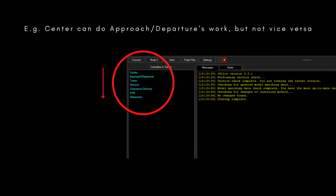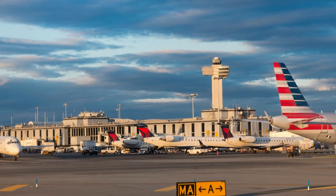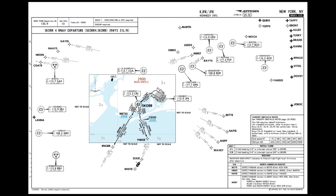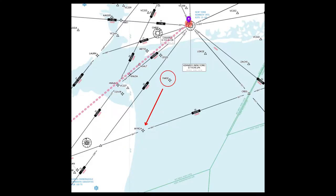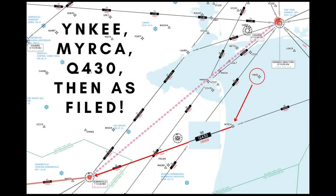Assume clearance delivery for New York is online. I tune that frequency and say: 'New York Clearance Delivery, good afternoon, Air Canada 248, gate 33, type A320neo, request IFR clearance to Los Angeles with information Bravo.' They come back: 'Air Canada 248, New York Clearance Delivery, good afternoon, cleared to Los Angeles via the SKORR Four departure, Yankee transition, direct MIRKA, then as filed, climb maintain 5,000, expect Flight Level 240 ten minutes after departure, departure frequency 135.9, squawk 6282.'